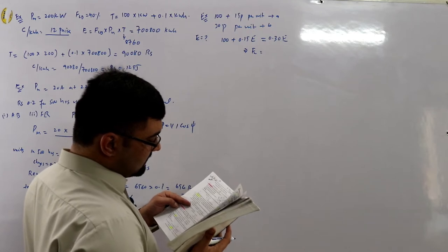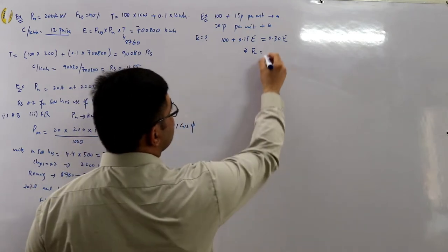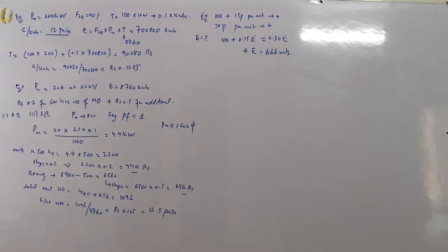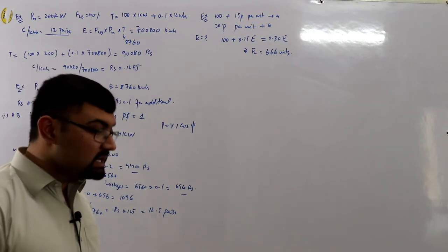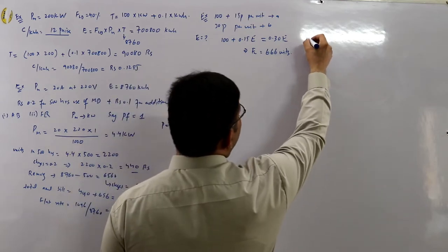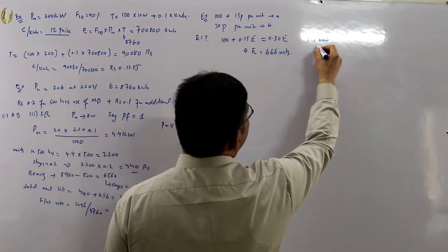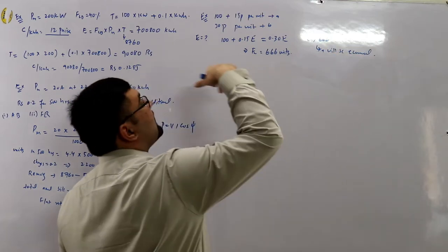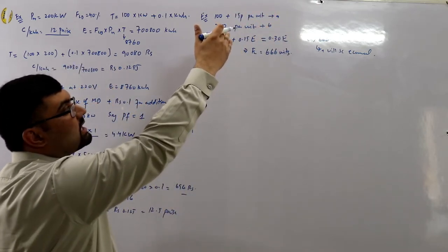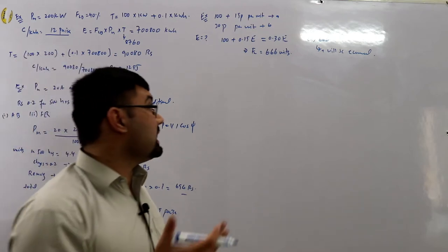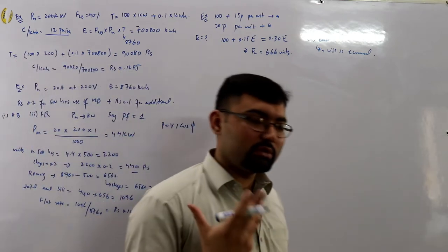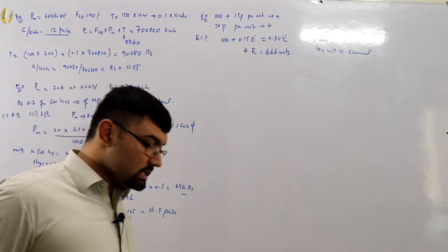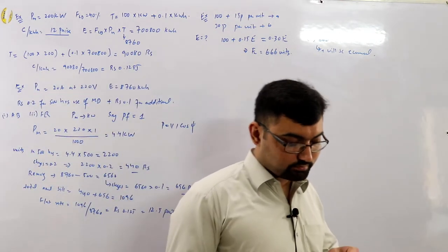Solving for e gives 666 units. At 666 units both tariffs cost the same. Above 666 units, Tariff A is economical because it charges only 15 paisa per unit versus 30 paisa for Tariff B.